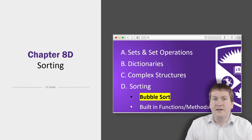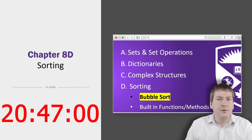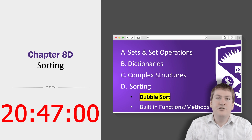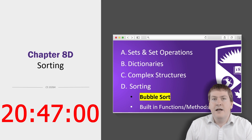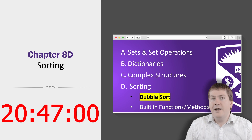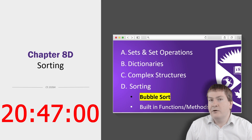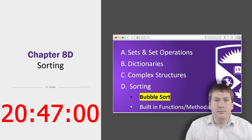If you just want to see the code for how you sort a list or a dictionary in Python, jump to this timestamp shown here and we'll get into implementing it. Otherwise, we'll get into sorting algorithms and take a look at bubble sort.